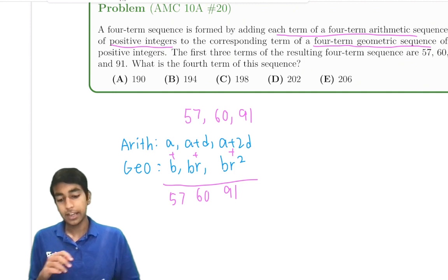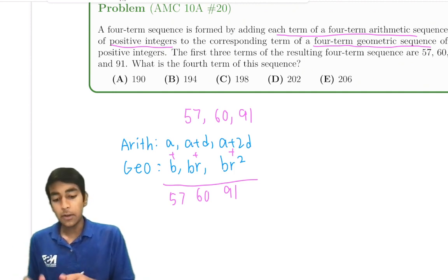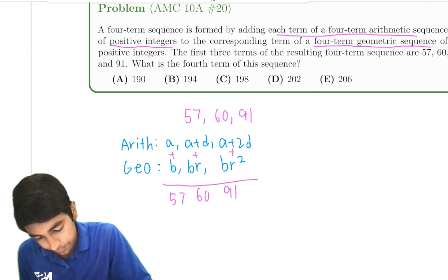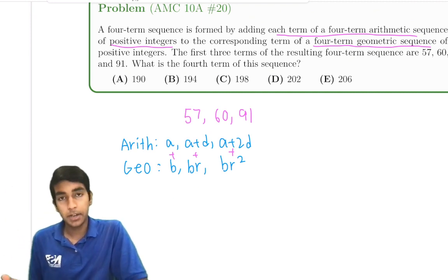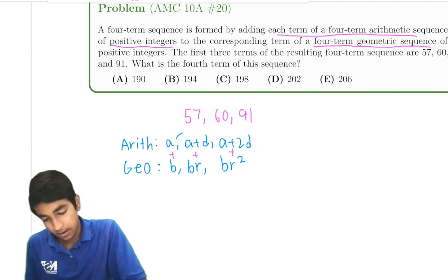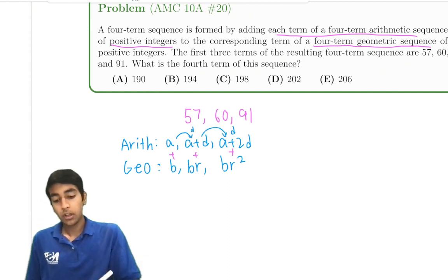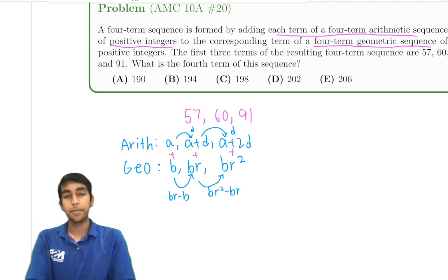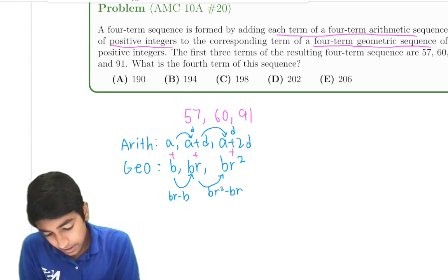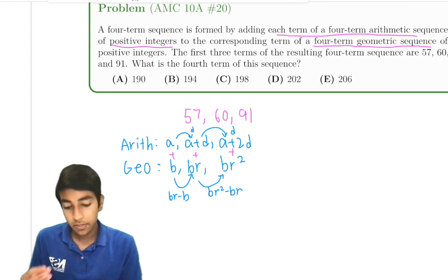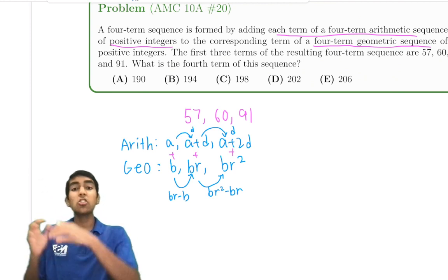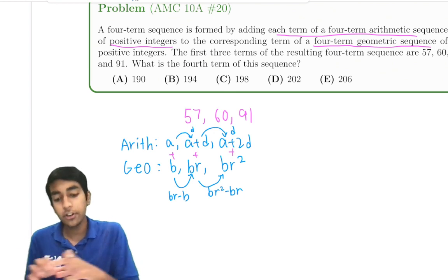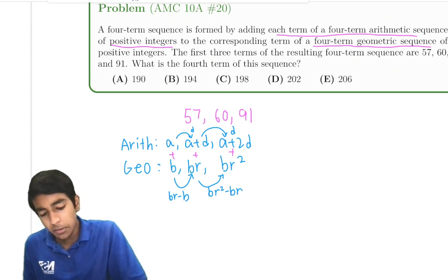The main logic here is that a geometric sequence, well, an arithmetic sequence has a common difference of d. For the geometric sequence, the first term has a common difference of br minus b, and the second term has a common difference of br squared minus br. So it kind of seems like the common difference between the first and the second term is almost the common difference between the second and third term. It's just a little bit different.